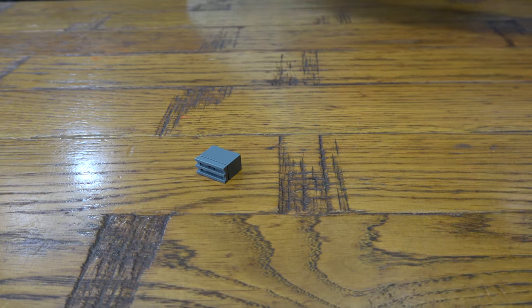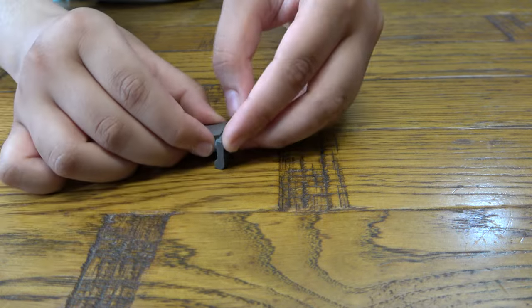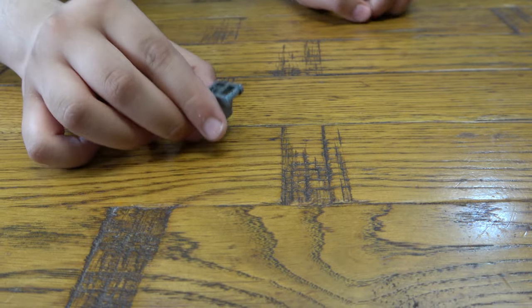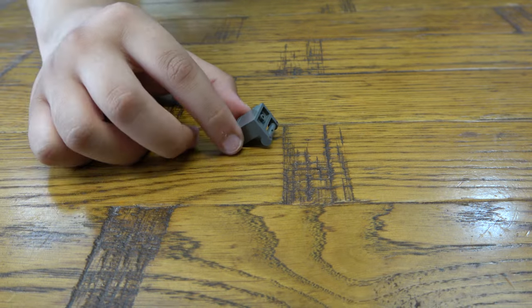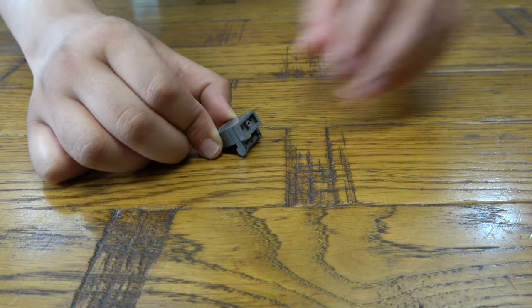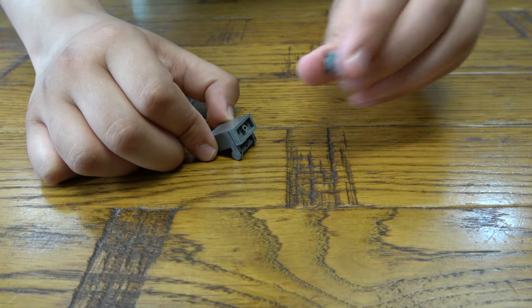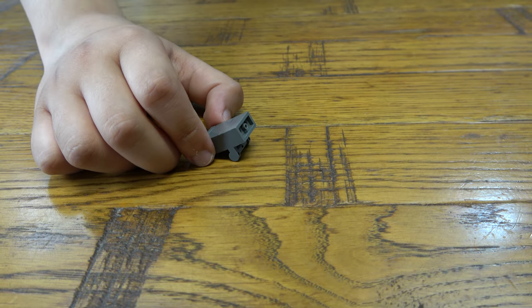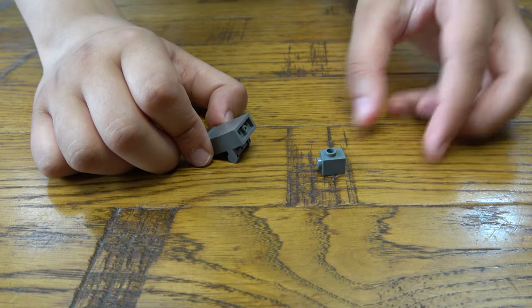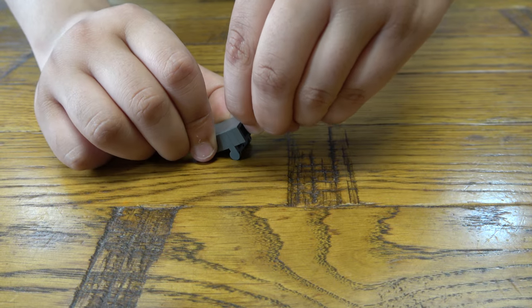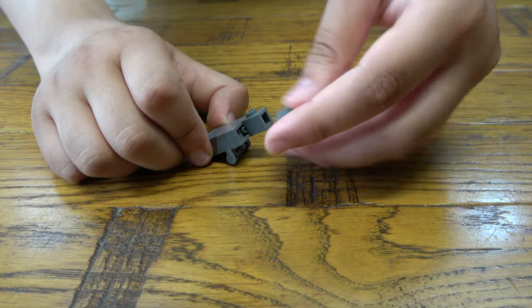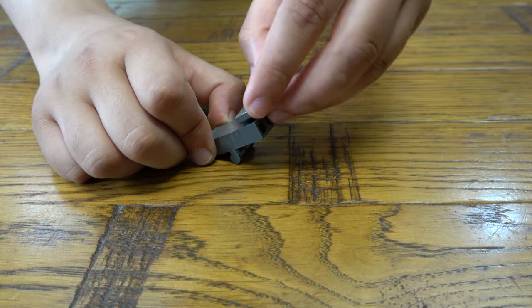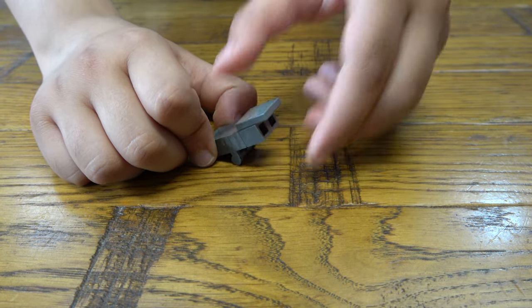And then next we're going to get that there. Place two, place two of these, and then get two of these, place them here and here. Next we're going to get this flat tile, place it there.